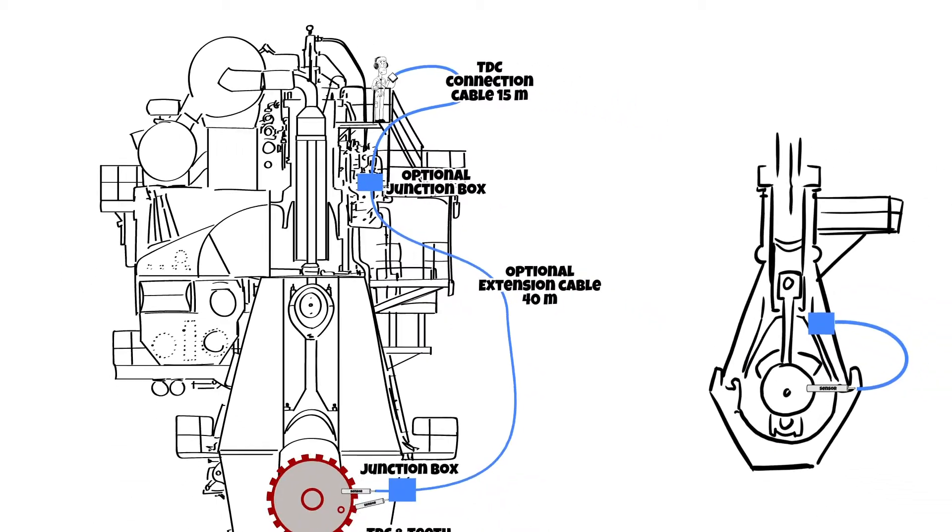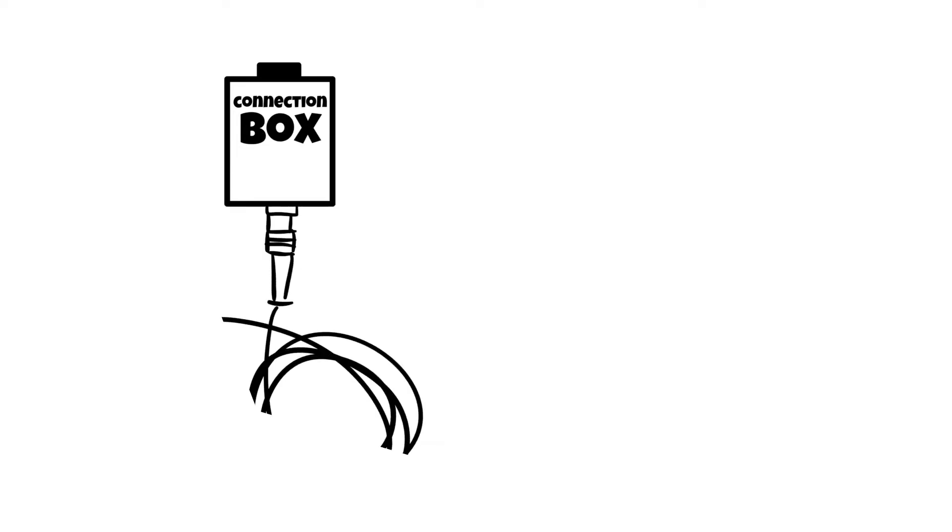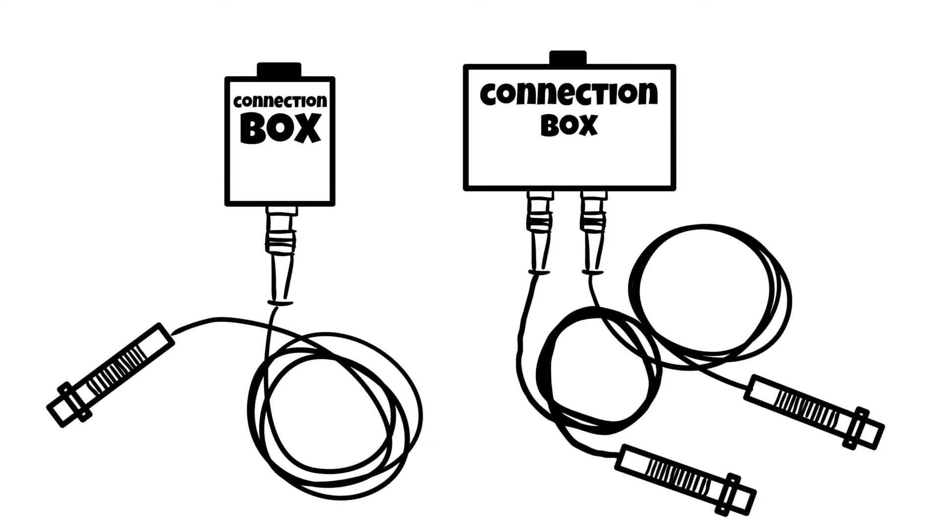On four-stroke engines, only one junction box is used. Two different connection boxes with pre-connected sensors are available depending on the type of pickups used.